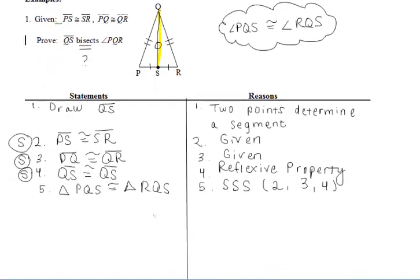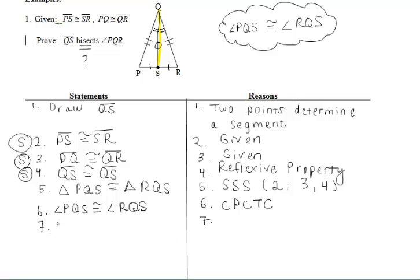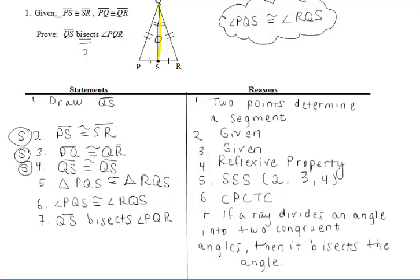Now after we prove two triangles congruent, we want to list the corresponding sides or angles that are congruent using CPCTC. The two angles that we want to get congruent are those angles at the top. So now that the two triangles are congruent, we can say that angles PQS and RQS are congruent by CPCTC, which allows us to say that ray QS must have bisected angle PQR. The reason is: if a ray divides an angle into two congruent angles, then it bisects the angle.